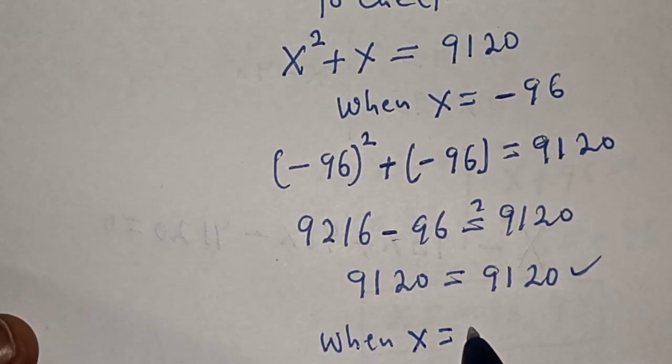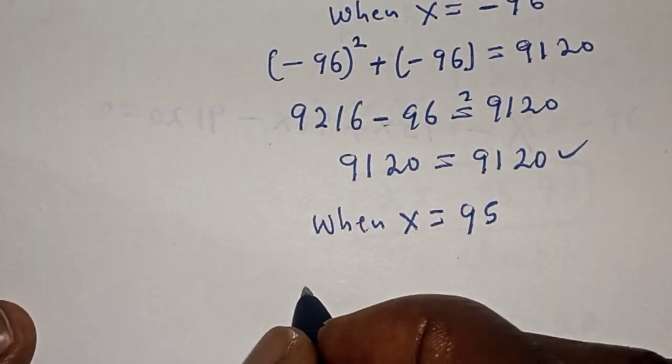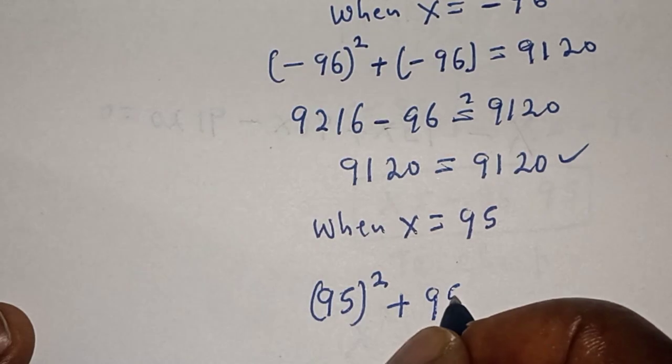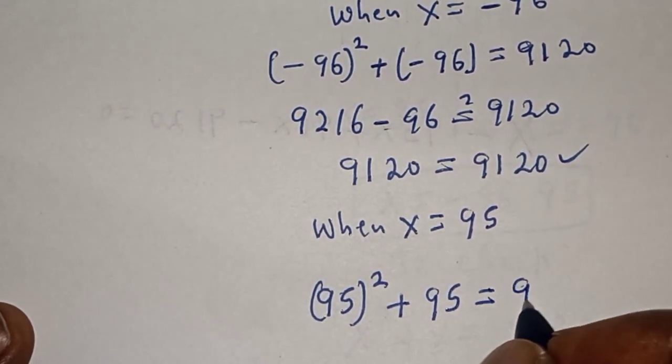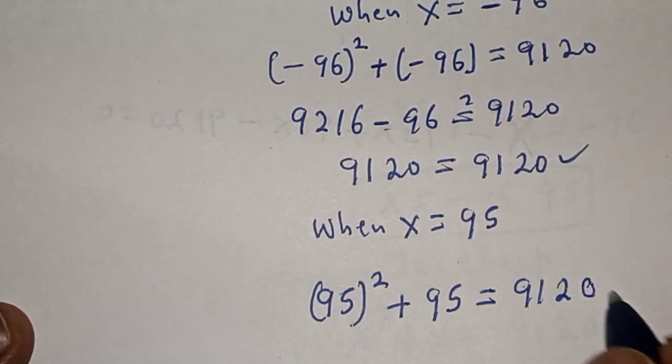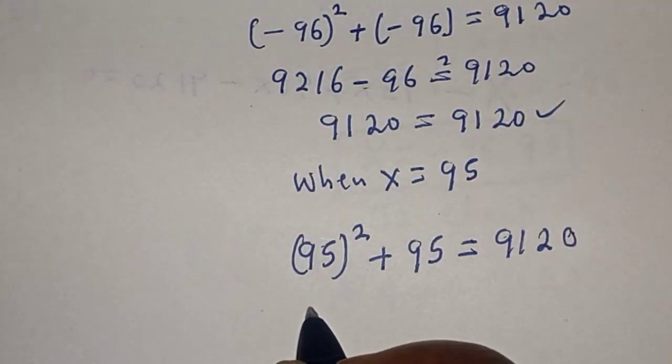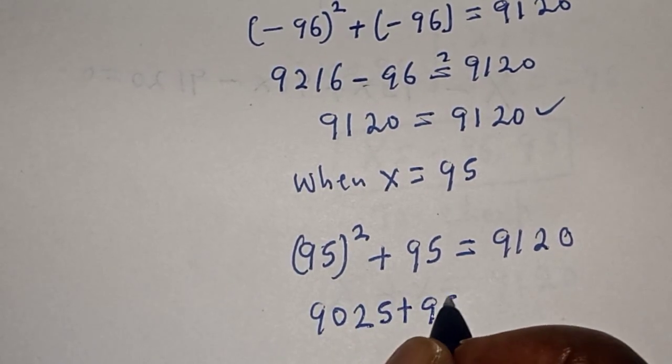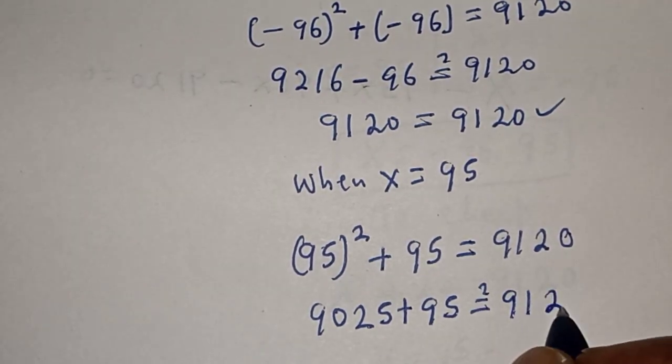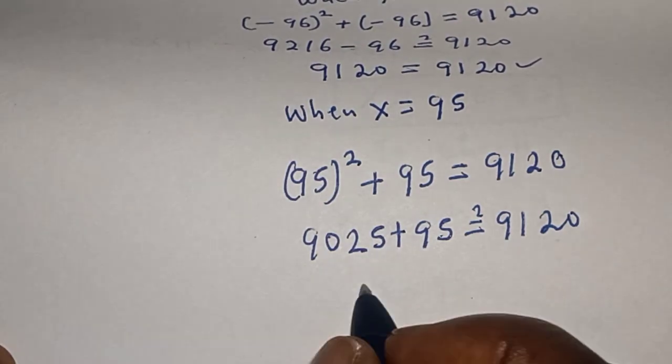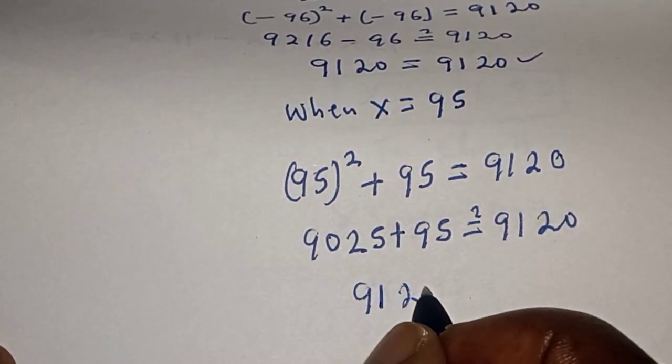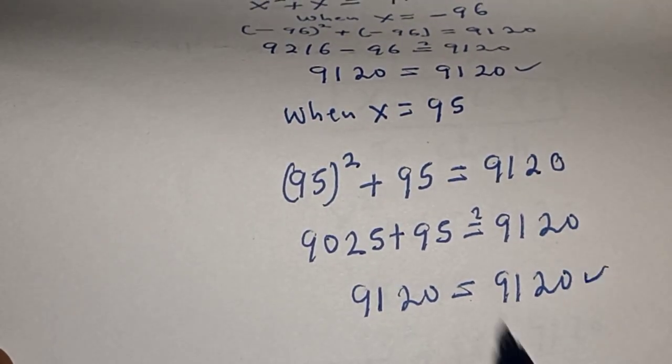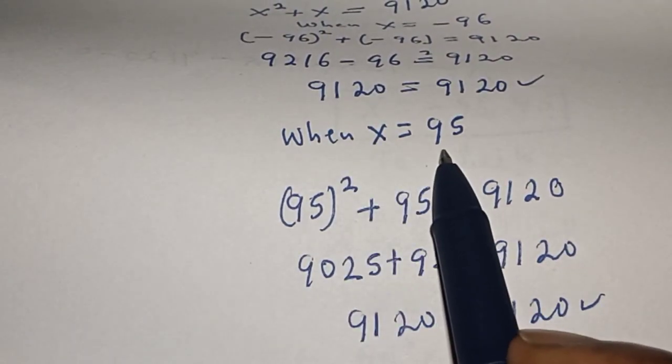When x is equal to 95, we have 95 squared plus 95 must be equal to 9,120. 95 squared is 9,025 plus 95 must be equal to 9,120. If you add this together we have 9,120 is equal to 9,120, which also satisfies the given equation at x is equal to 95.